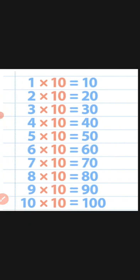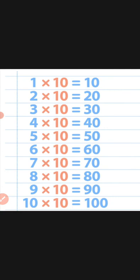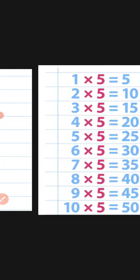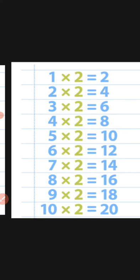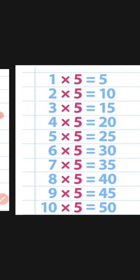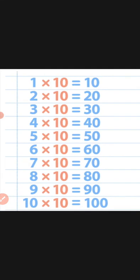This is also a very easy table. Next is table of ten. One ten is ten, two tens are twenty, three tens are thirty, four tens are forty, five tens are fifty, six tens are sixty, seven tens are seventy, eight tens are eighty, nine tens are ninety, ten tens are one hundred. Copy this also in your notebook. Make sure to copy table of two, table of five, and table of ten.